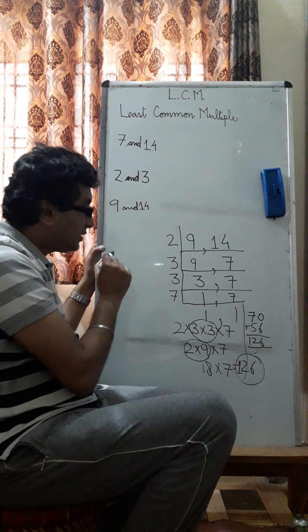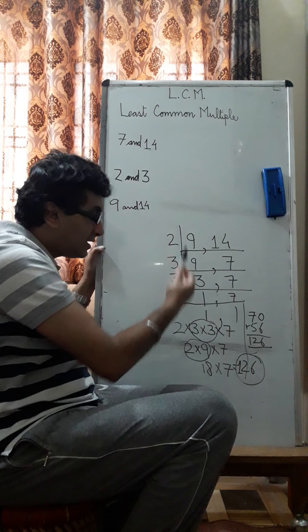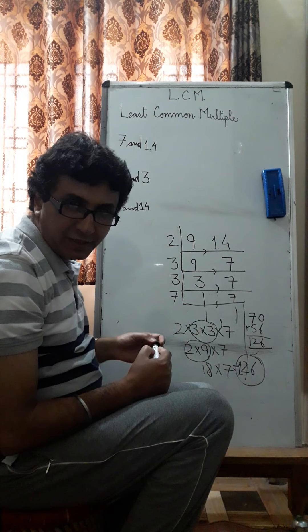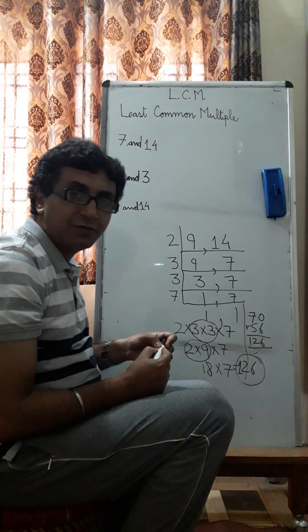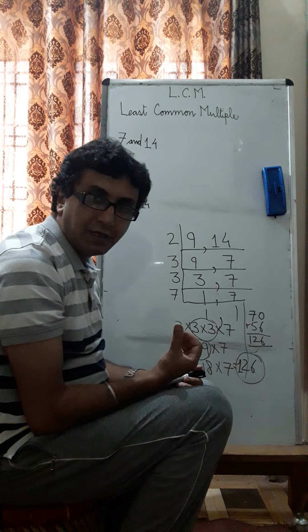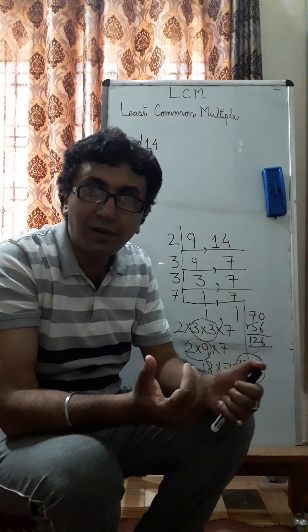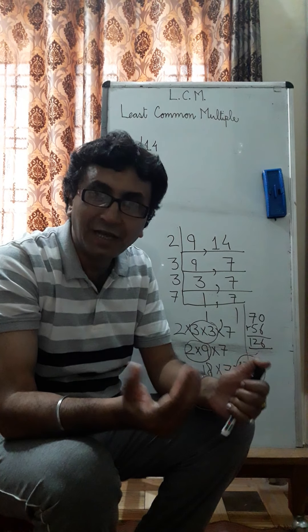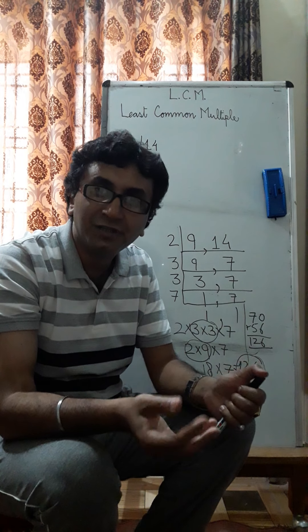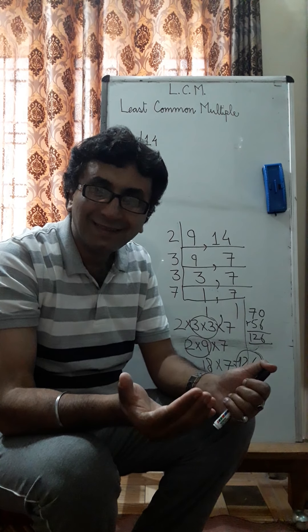The only thing that you have to remember children over here, you should start checking with the smallest prime number and then keep on moving ahead with all the prime numbers till you in the end get a 1 and a 1. So that's how you'll be able to find the LCM very effectively using the common division method. Now we will apply this knowledge of LCM into adding and subtracting of fractions, unequal fractions, where the denominators are not equal. So we'll apply this knowledge there. I hope you enjoyed the lesson. Thank you.